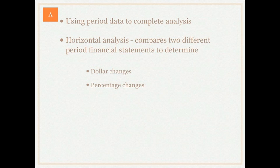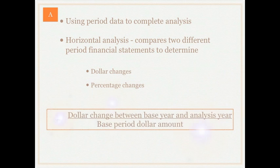To do this we will need a formula. The numerator will be the dollar change between a predetermined base year and the year that we're analyzing. We will then take that dollar change and divide it by the base period dollar amount.